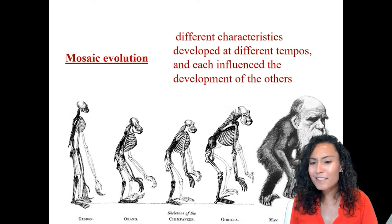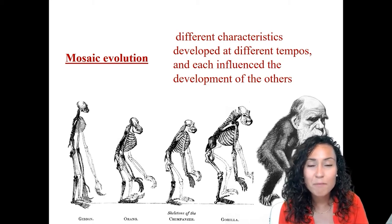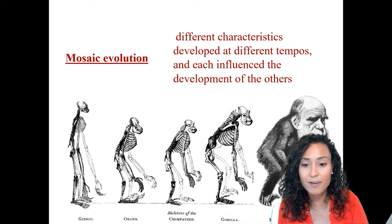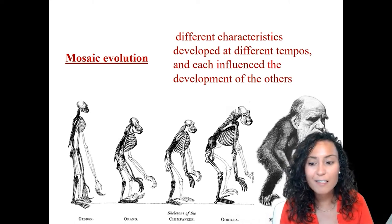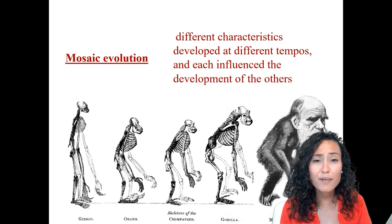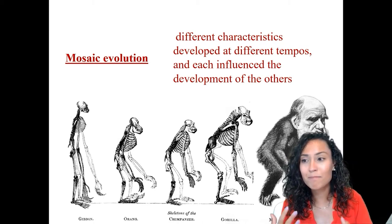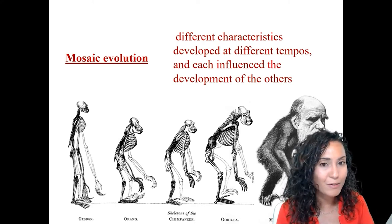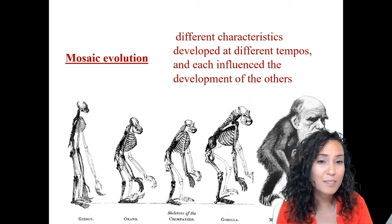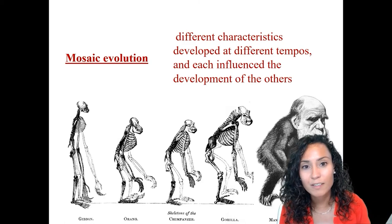Scholars have now taken a different approach, arguing for what's called mosaic evolution. Mosaic evolution means that different characteristics develop at different tempos and each of those traits influences the development of others to a greater or lesser degree. Basically, you can't have the development of the big brain without walking on two feet, without tool making, and without similar developments in cranial anatomy with smaller canines.